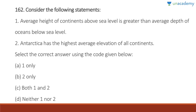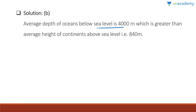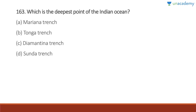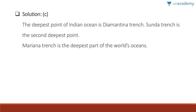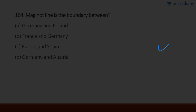Question 162: Average height of continents above sea level is greater than the average depth of oceans — wrong. Antarctica has the highest average elevation of all continents — correct. Answer is B. The average depth of oceans below sea level is 4,000 meters, which is greater than the average height of continents above sea level (less than one kilometer). Question 163: The deepest point of the Indian Ocean is the Diamantina Trench. The Sunda Trench is the second deepest. The Mariana Trench, at approximately 10,900 meters, is the deepest part of the world's ocean — located in the Pacific.